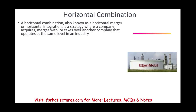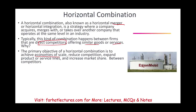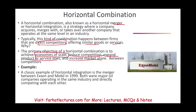Horizontal combination, also known as horizontal merger or horizontal integration, is a strategy where a company acquires or merges with another company that operates at the same level in the industry. Typically this happens between two firms that are direct competitors offering similar goods and services. The primary objective is to achieve economies of scale, reduce competition, expand product lines, and increase market share. A classic example is the merger of Exxon and Mobil in 1999, both oil companies directly competing with each other, which created one of the world's largest companies, ExxonMobil.